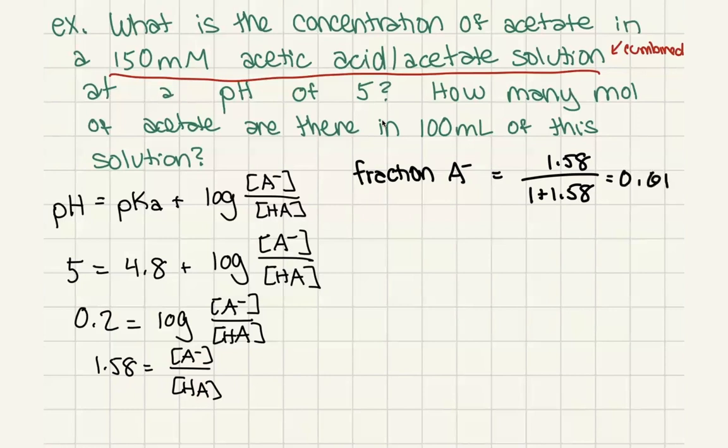So that is the fraction of it that is in the deprotonated state, but we want to know the concentration. Thankfully, we know the final concentration, so all we have to do is multiply this by that final concentration. So we just take our 0.61 fraction times 0.150 molar, and that's going to give us 0.092 molar, which is the same as saying 92 millimolar.